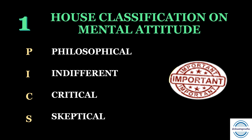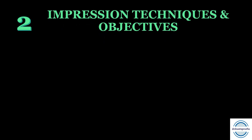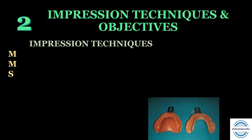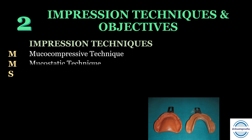If you want to go into the details of the classification, the video has been shared in the description. The second mnemonic is for impression techniques and objectives for impression making — a very important topic asked as a long question or short note in theory exams, in preclinical prosthetic viva, and in chair-side viva for final years. For impression techniques, the mnemonic is MMS — short for multimedia messaging service. M for muco-compressive technique, second M for muco-static technique, and S for selective pressure technique.